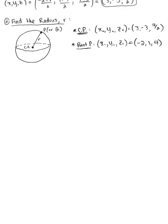To get this radius length, we need to find the distance between these two points. So our radius r, using our distance formula, is going to be √[(x₁ - x₀)² + (y₁ - y₀)² + (z₁ - z₀)²].